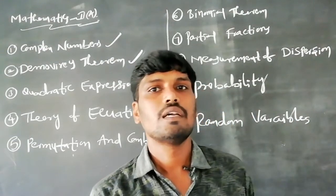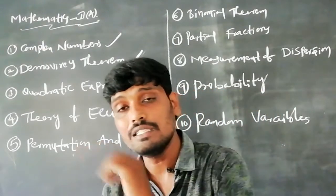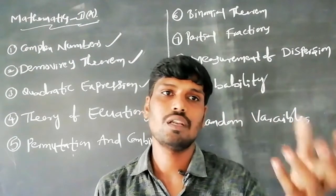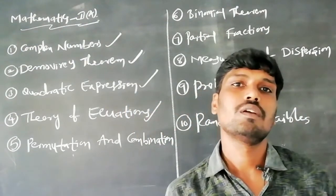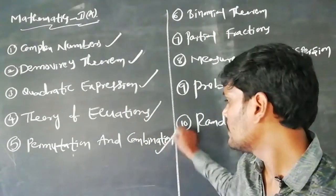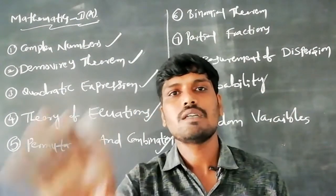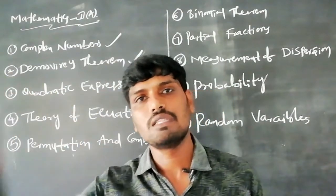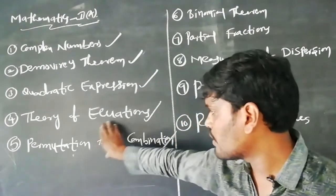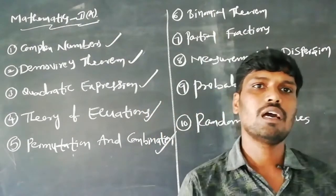In Theory of Equations: problems where three roots are in AP, finding the value, three roots in GP, first and second class reciprocal equations — what is a first class reciprocal and what is a second class reciprocal. Also, given one root, find the second root. In Permutation and Combination: permutation is arrangement, combination is selection. At least two questions come from this — one on permutation (nPr) and one on combination (nCr).